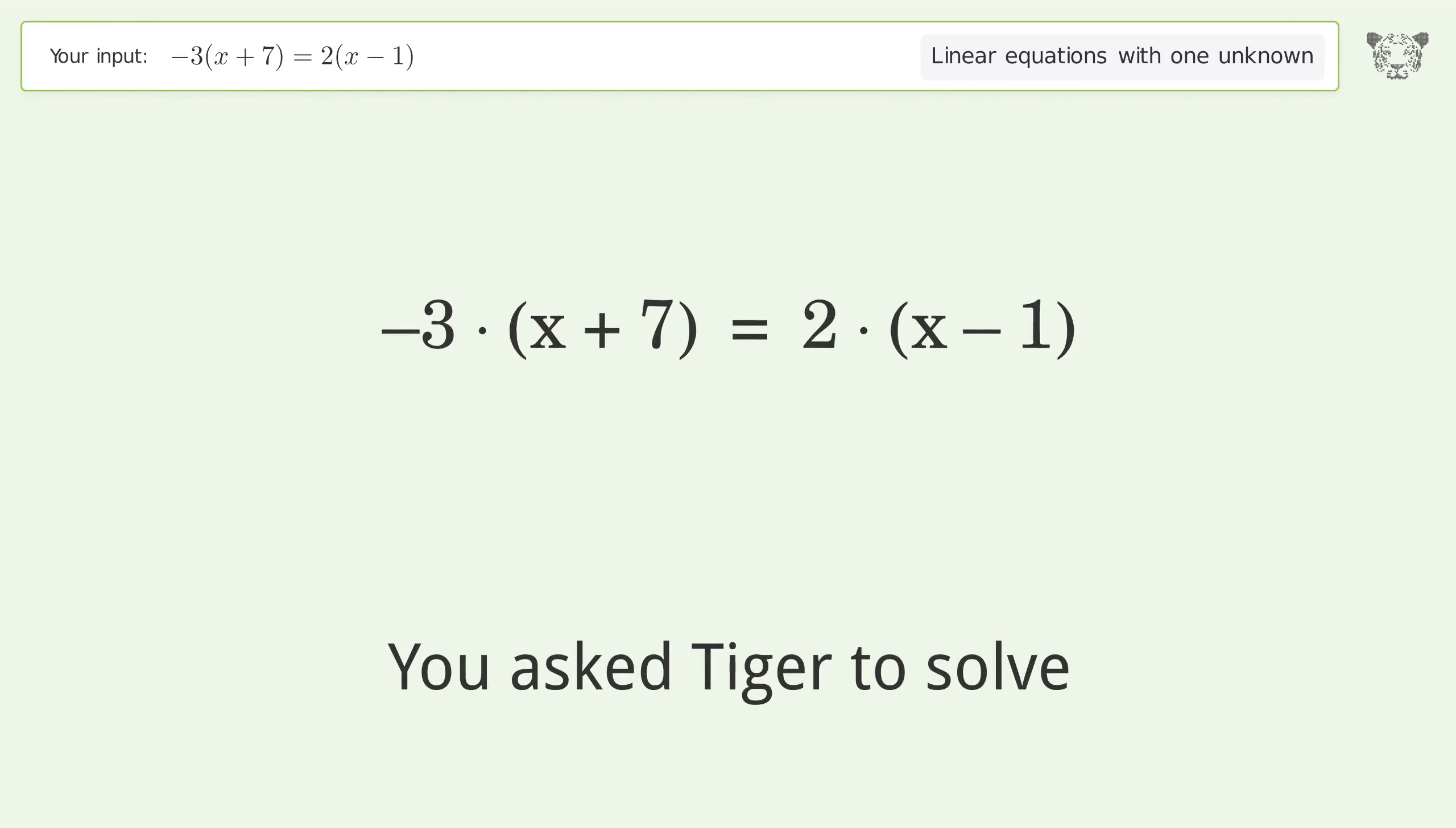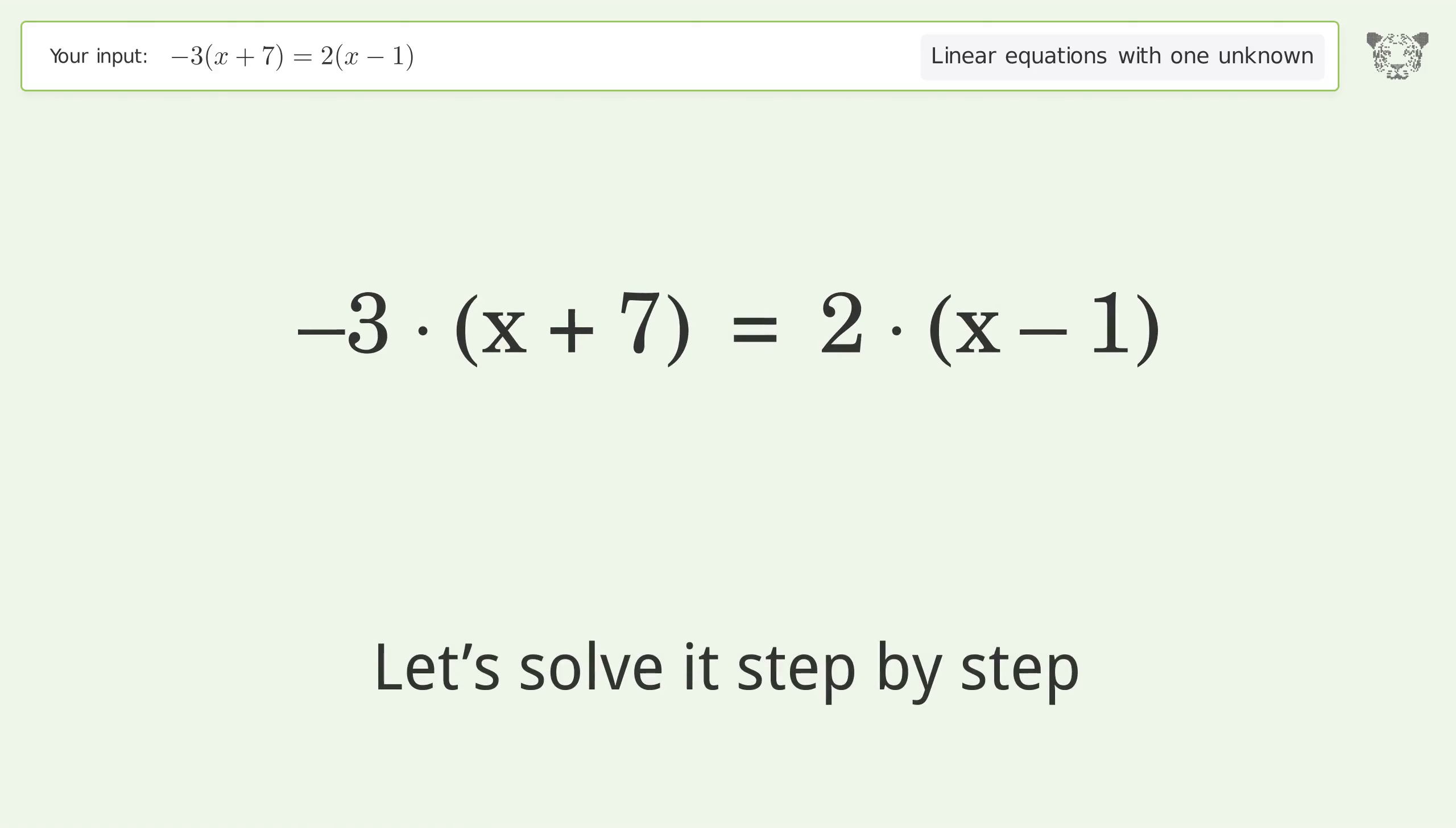You asked Tiger to solve this. It deals with linear equations with one unknown. The final result is x equals negative 19 over 5. Let's solve it step by step.